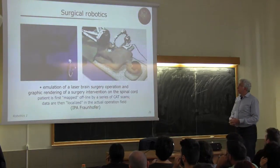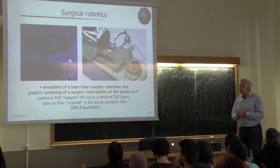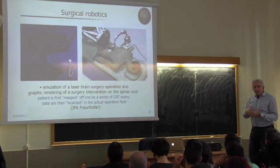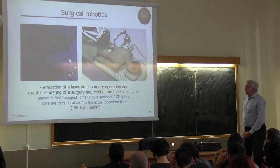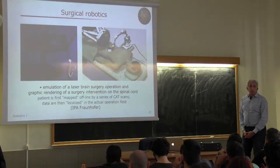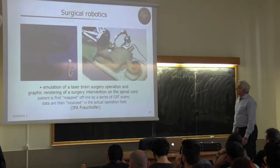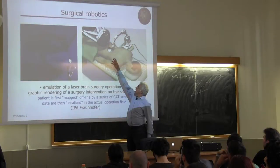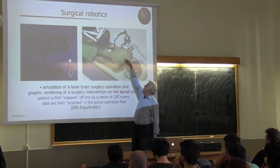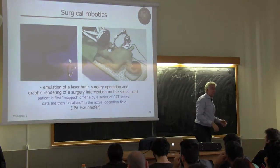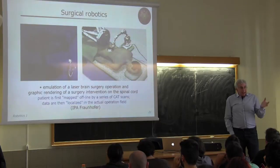In surgical robotics, in the case of orthopedics, large forces and accuracy are required. Even if the forces are not large, you may require accuracy which is almost not achievable for a human surgeon. So robots assist the surgeon — like in brain surgery or whenever you get close to the nervous system. Here is a rendering of an operation where you can recognize two types of robots: on the left a Stewart platform parallel kinematic robot, and here a conventional serial arm.